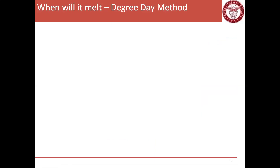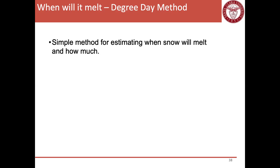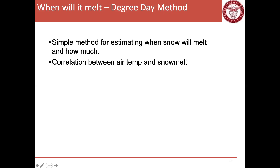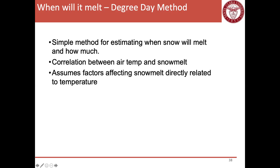The next question is when will the snow melt. We want a simple method for estimating when snow melts and how much will melt. We'll use a correlation between air temperature and snow melt — this method is called the degree-day method. It makes the big assumption that the factors affecting snow melt are directly related to temperature only — just air temperature. The melt on any day equals C times the difference between the mean or max daily temperature and the base temperature at which snow melts.